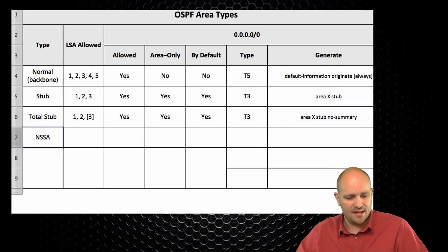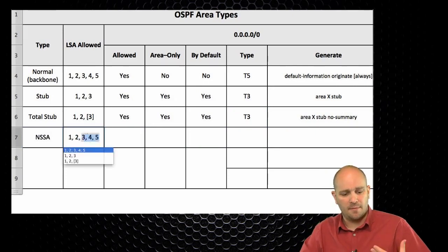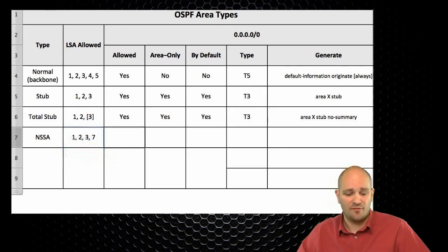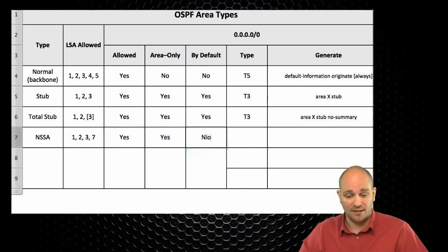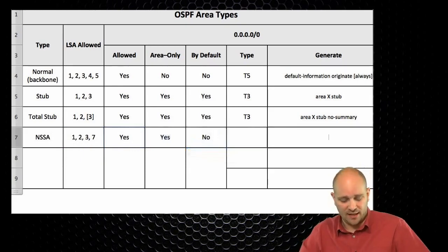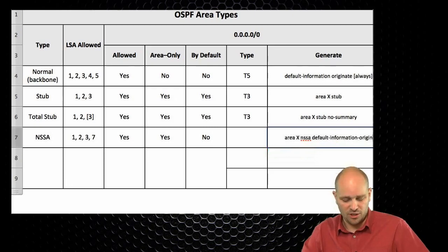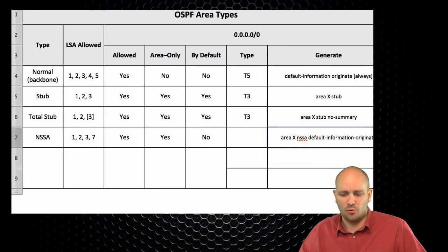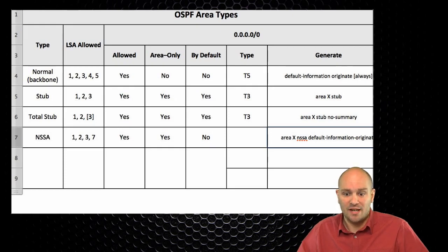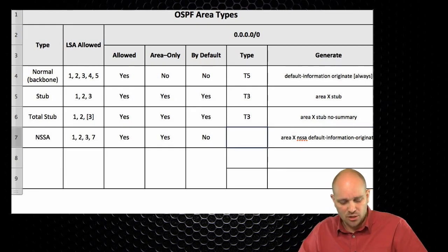The next area type is NSSA. In NSSA, LSA types 1, 2, 3, and 7 are allowed. Types 4 and 5 are not allowed. The default route is allowed and can be injected directly into the area, but it is not injected by default. To inject it, use 'area X nssa default-information-originate'. When entered, a type 7 LSA carrying the default route is injected.